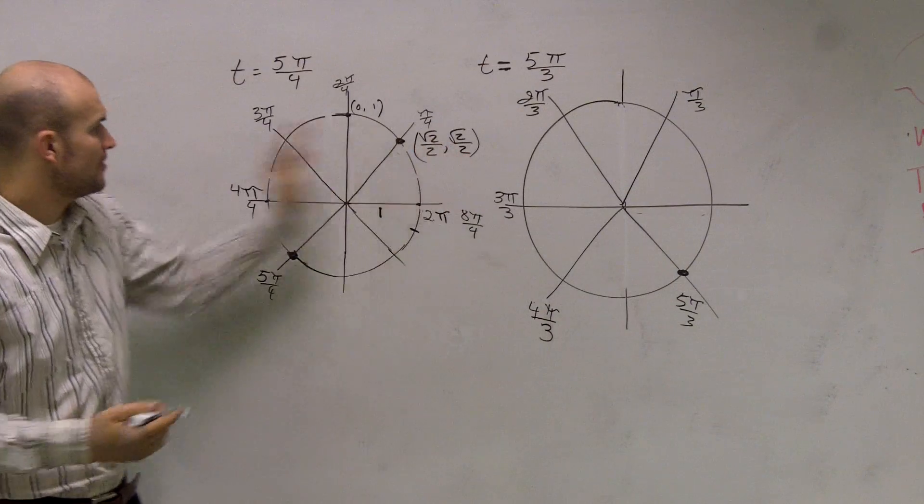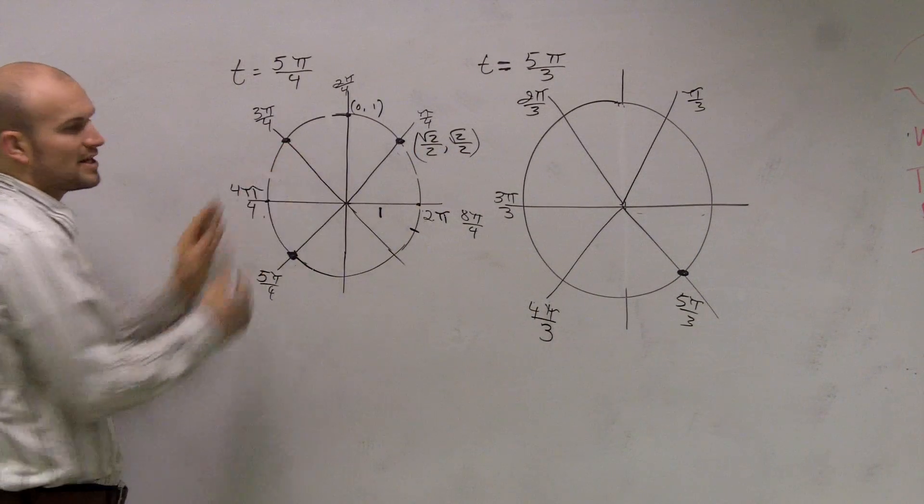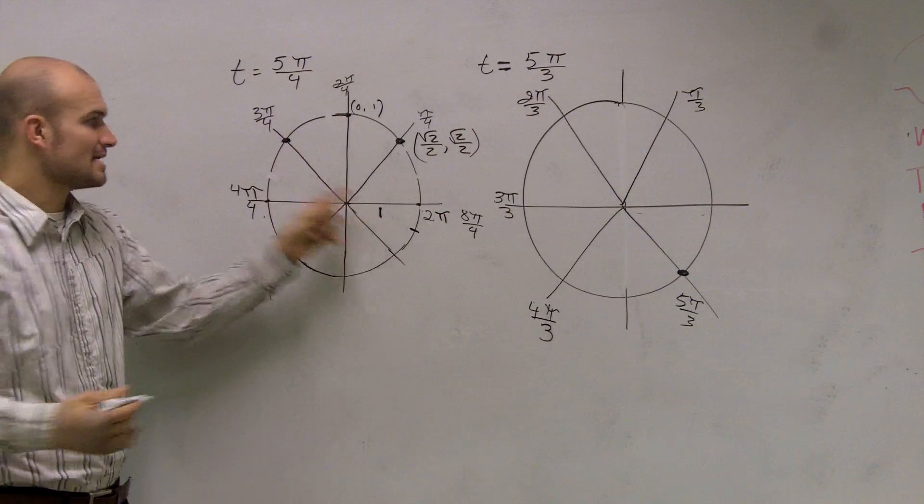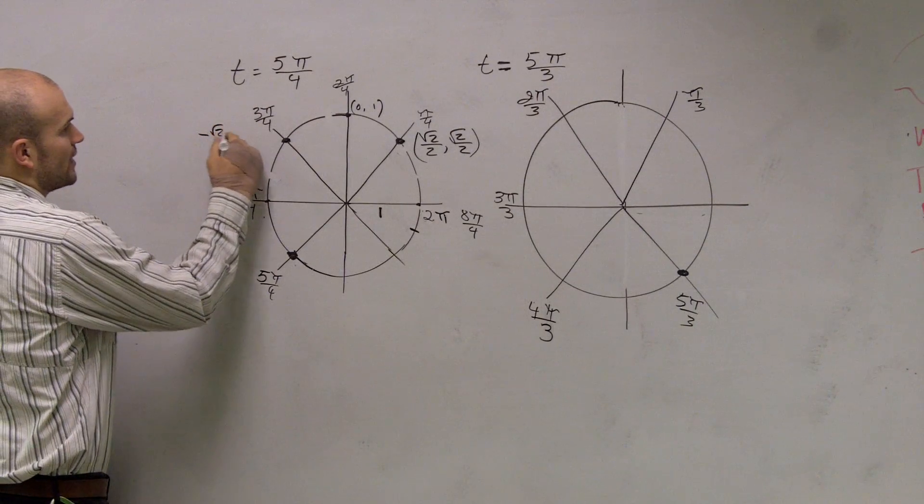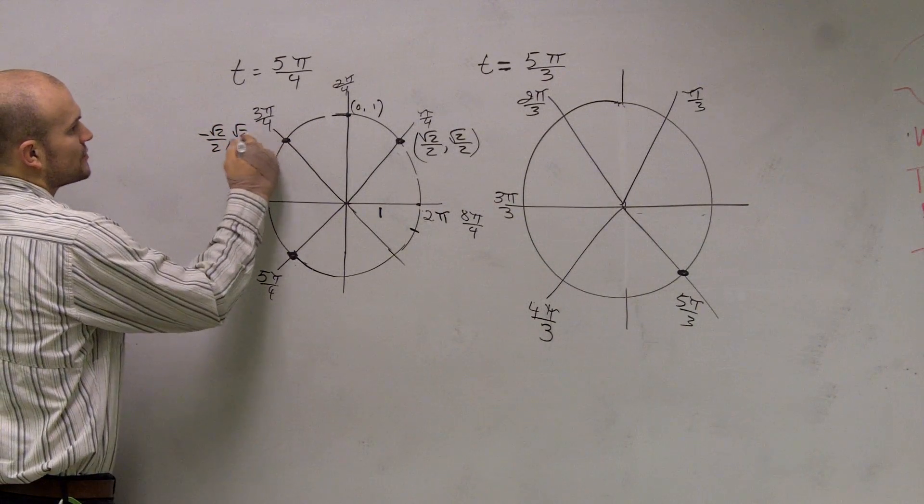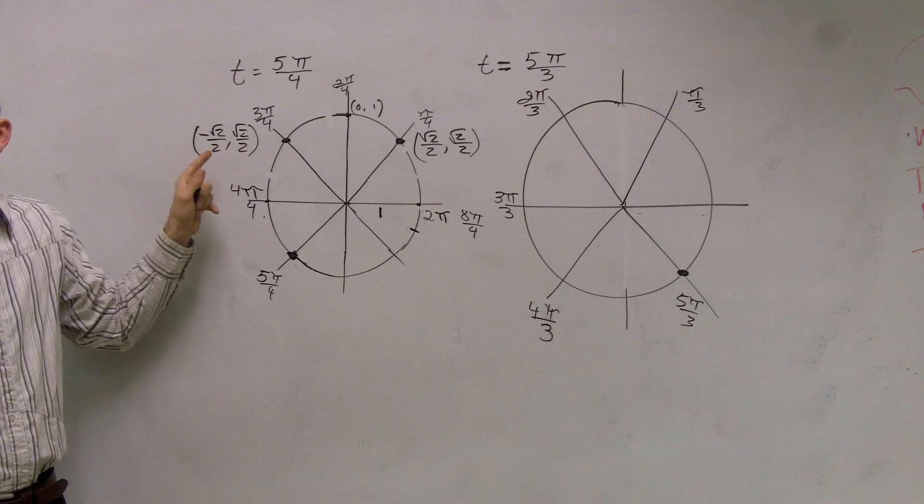So if I look at this, this point over here is a direct reflection of that point over my y-axis. Therefore, that's now square root of 2 over 2 comma square root of 2 over 2. The only thing that's different is my x is negative.